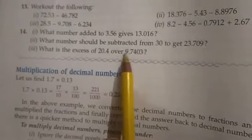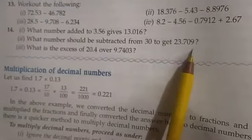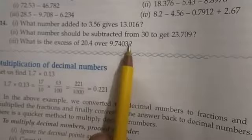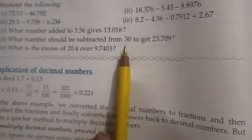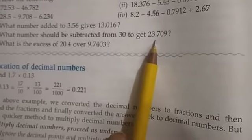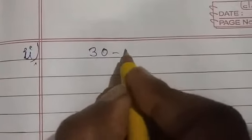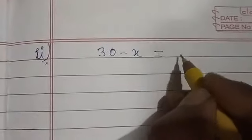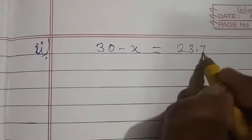What number should be subtracted from 30 to get this? What number should we subtract from 30 to get the result 23.709? So what will be the equation? 30 minus x is equal to 23.709.